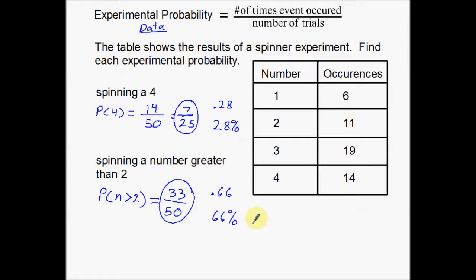So there's just a couple of examples of experimental probability. Now remember, the key difference between theoretical and experimental probability is the fact that experimental probability uses data. It uses a number, it uses a chart or a table or something to that effect like what we have here.